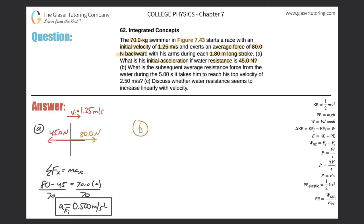Okay, in the x direction. So now let's take a look at letter B. Letter B says: What is the subsequent average resistance force from the water during the five seconds it takes him to reach his top velocity of 2.5 meters per second?